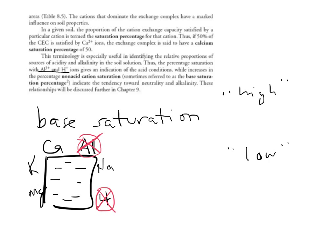So we take the percentage of sites filled with cations other than aluminum and hydrogen. And that gives us a base saturation percentage, so let's say it's 45%, or let's say it's 56% base saturation.